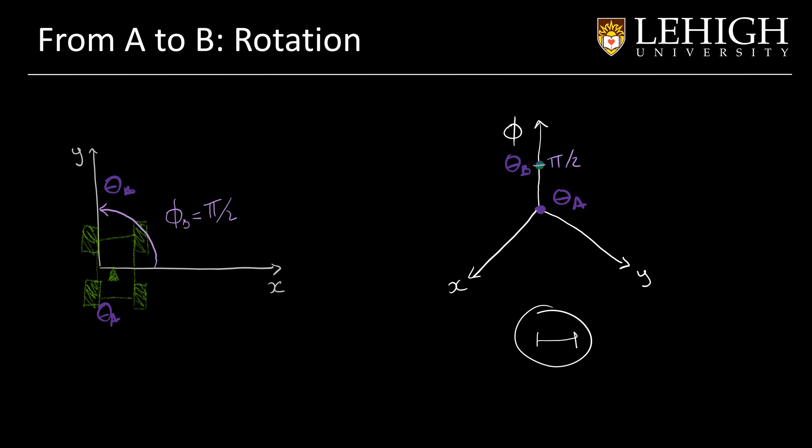In our configuration space, we can also draw our Pi over 2 and place the position of the new point. What we will have is another straight line that goes from theta A to theta B.